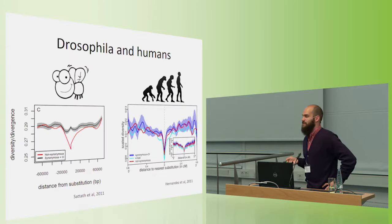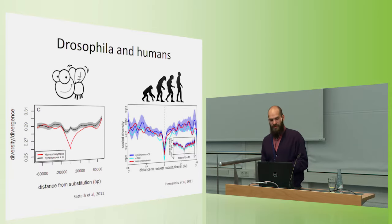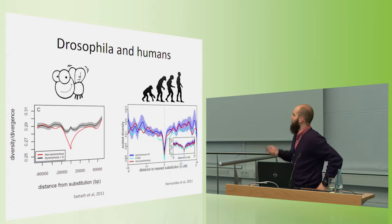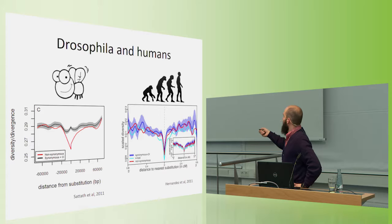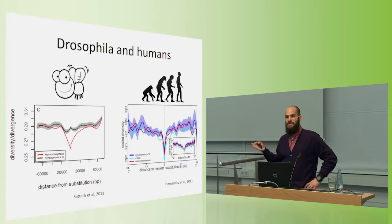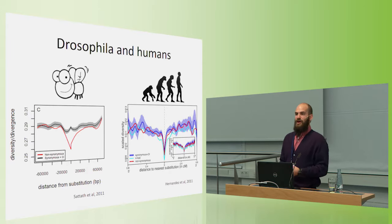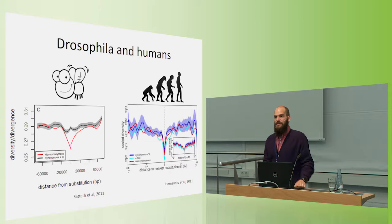And this was done several years ago in both flies and humans, and it's since been done in many species, and we see different patterns in different species. So here's what we see in flies, Drosophila fruit flies. There's a reduction of diversity surrounding non-synonymous substitutions that's several fold greater than the reduction of diversity surrounding synonymous substitutions. This indicates that hard sweeps or selection on beneficial new mutations have really been one of the forces that have primarily shaped Drosophila evolution.